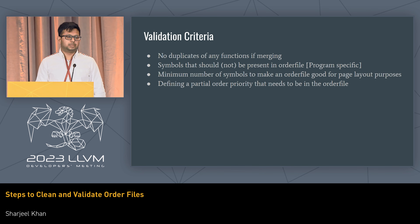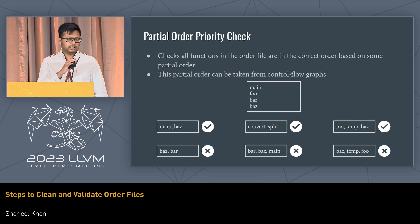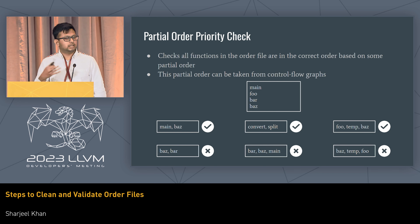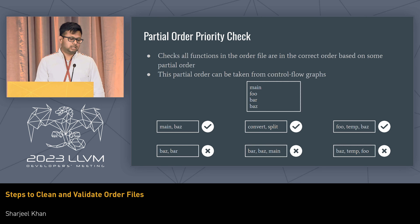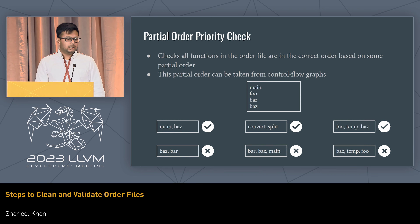We do something extra, which is a partial ordering check, where we build it from the control flow graph and verify the order file respects it. For example, if main, foobar, baz is our order file, we check if it's consistent with our derived partial order. It doesn't have to represent the entire order. Is main before baz correct? Yes. Are other symbols like converse_split present? No, but it's still correct because they don't violate any constraint. But if you have baz before bar when bar should come first, we know it's failing. We try to allow many partial orders and check them all to ensure correctness.